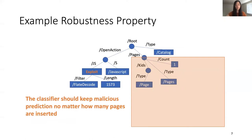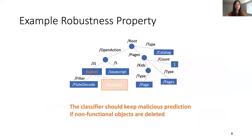For any security classifier to be practically useful, it must have robustness in addition to high accuracy. The malware classifier should have a robustness property that it keeps a malicious prediction no matter how many benign pages are inserted into the PDF malware. As another example, the classifier should keep a malicious prediction if non-functional objects are deleted — for instance, an attacker should not be able to evade the classifier by deleting the non-functional length field of the exploit.